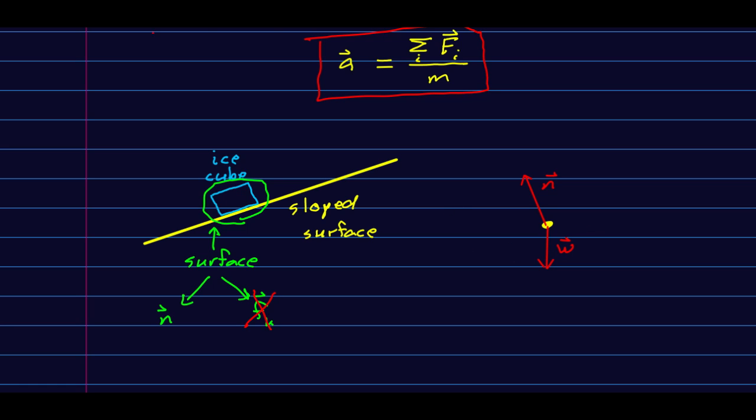And now you need to take a vector sum of those. Now we know something. This ice cube is not going to leap off the surface. It's also not going to fall through it. So the acceleration has to be parallel to the surface, either up the surface or down it. And so that will tell us how to draw this. We'll have the normal. And we need to get a result parallel to the surface. And so the weight must be of the right size compared to the normal to give us something that points, you can see, down the slope.